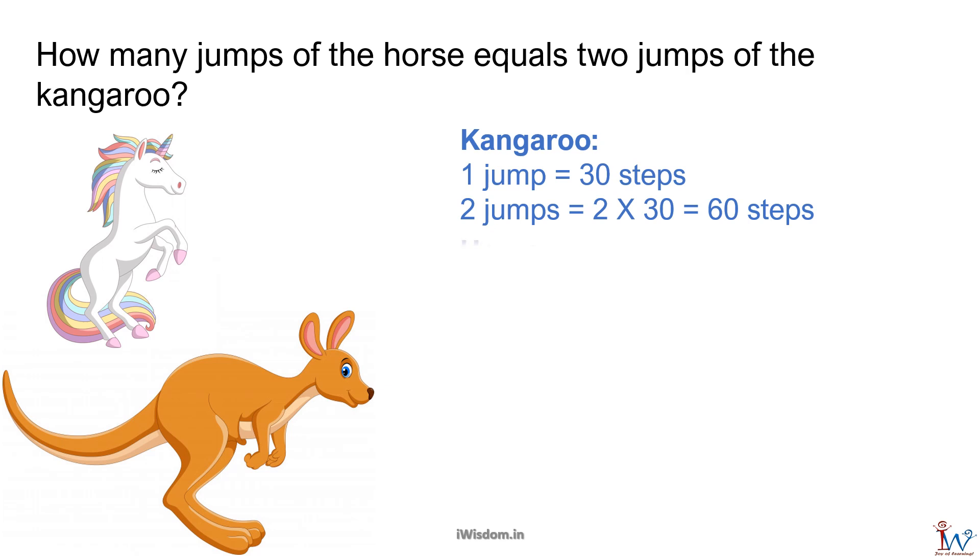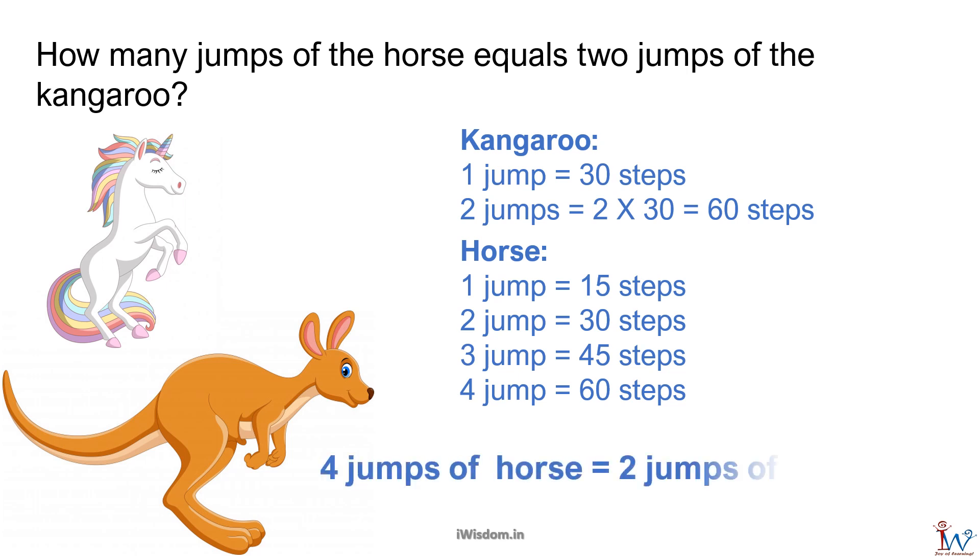1 jump of horse is equal to 15 steps. 2 jumps is equal to 30 steps. 3 jumps is equal to 45 steps. 4 jumps is equal to 60 steps. So 4 jumps of horse is equal to 2 jumps of kangaroo. Excellent!